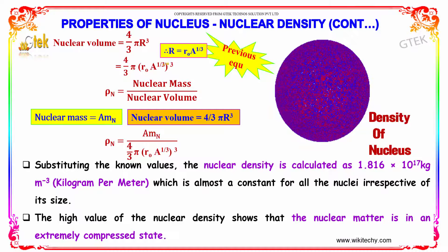3 and 3 get cancelled. Rho N equals nuclear mass divided by nuclear volume. We will be getting the nuclear mass A into M divided by 4 by 3 pi into R naught into A power 1 by 3. Substituting the known values, nuclear density is calculated as 1.816 into 10 power 17 kilogram per meter cube, which is almost a constant for all the nuclei irrespective of its size.